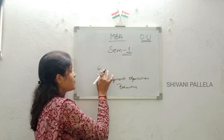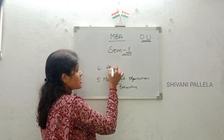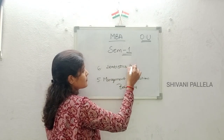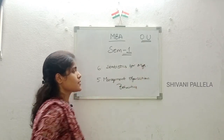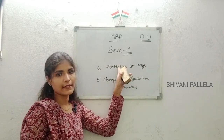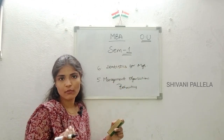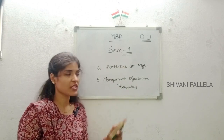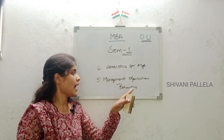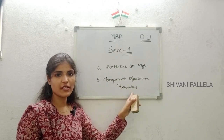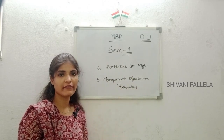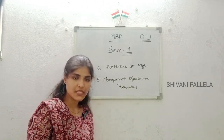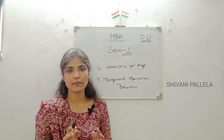The sixth subject is Statistics for Management. Here you will learn all topics related to statistics like mean, median, mode, discrete series, continuous series, correlation, and regression. In Management Organization Behavior, you will learn about management behavior and organizational behavior. So in MBA semester one, you are having a total of six subjects under Osmania University.